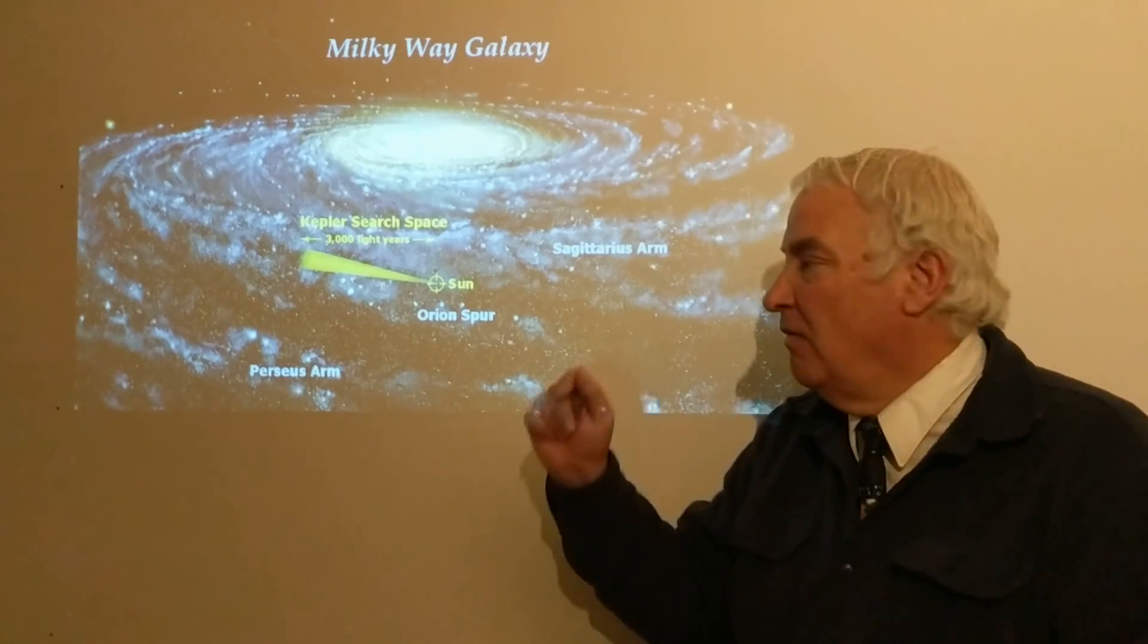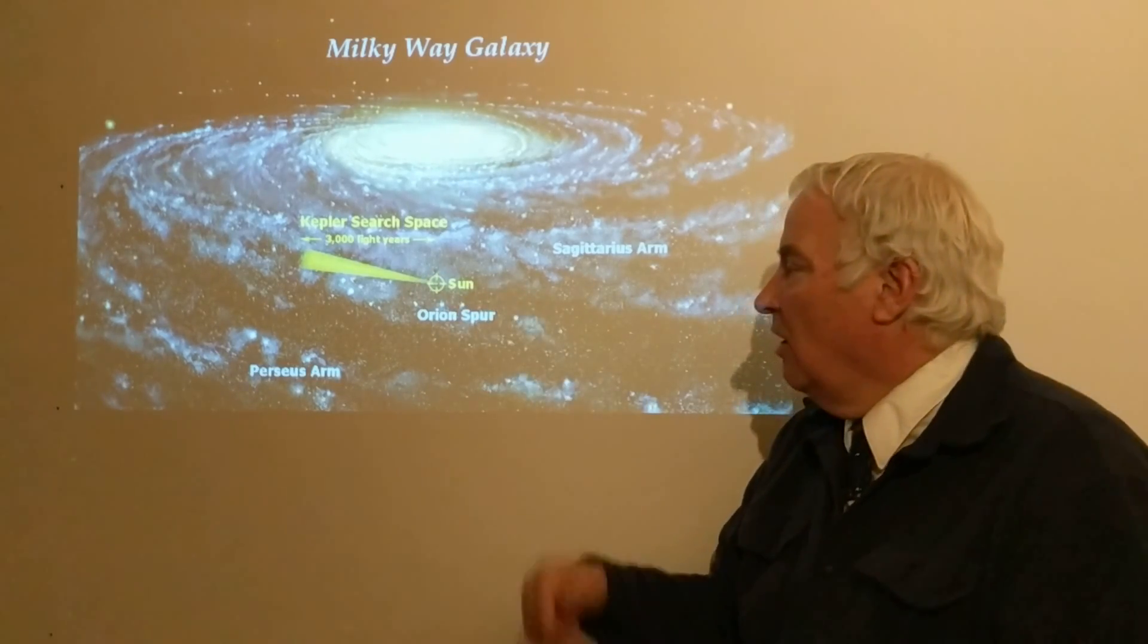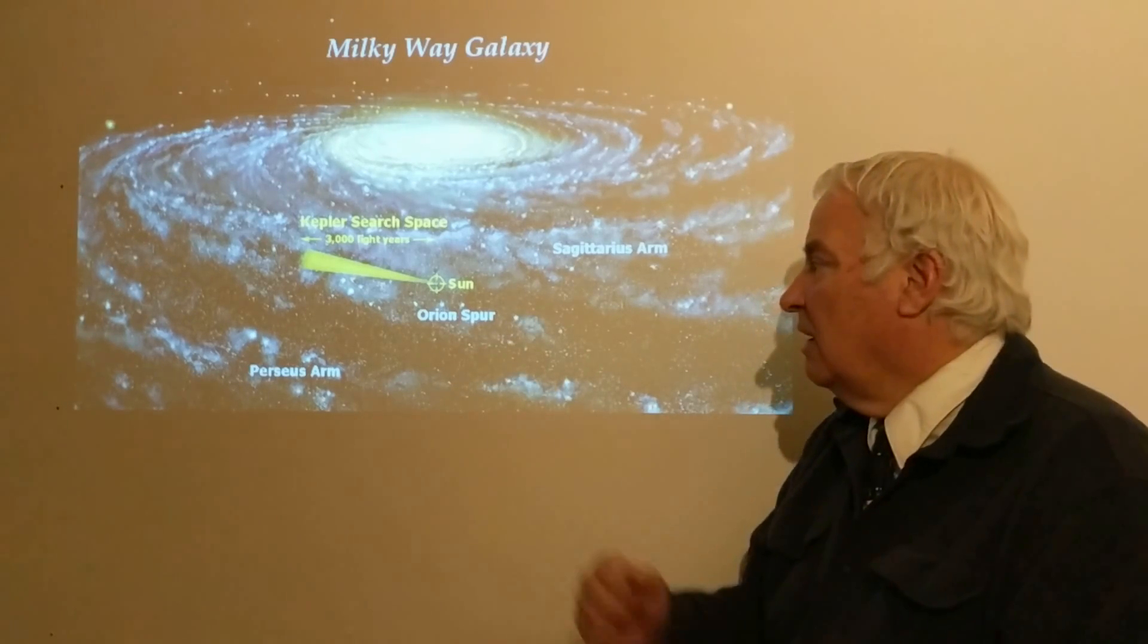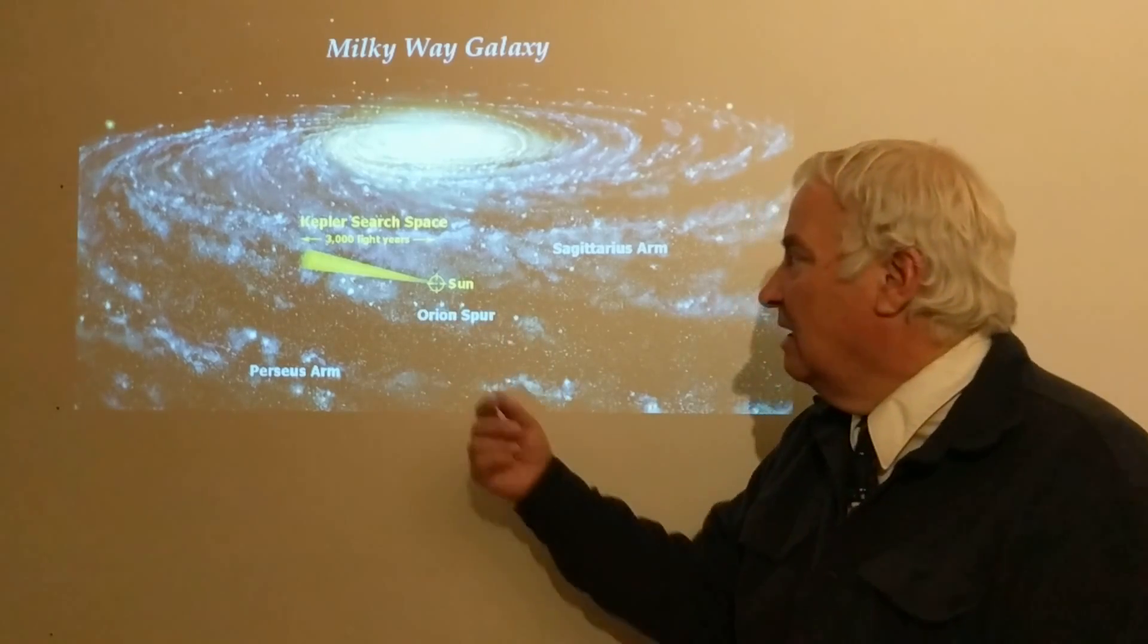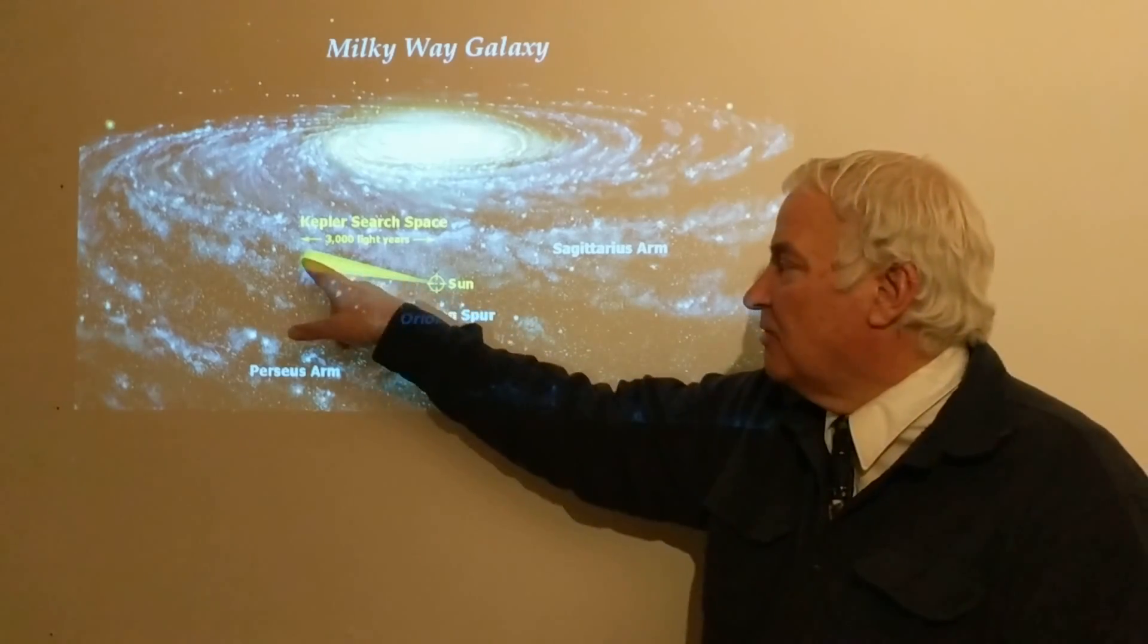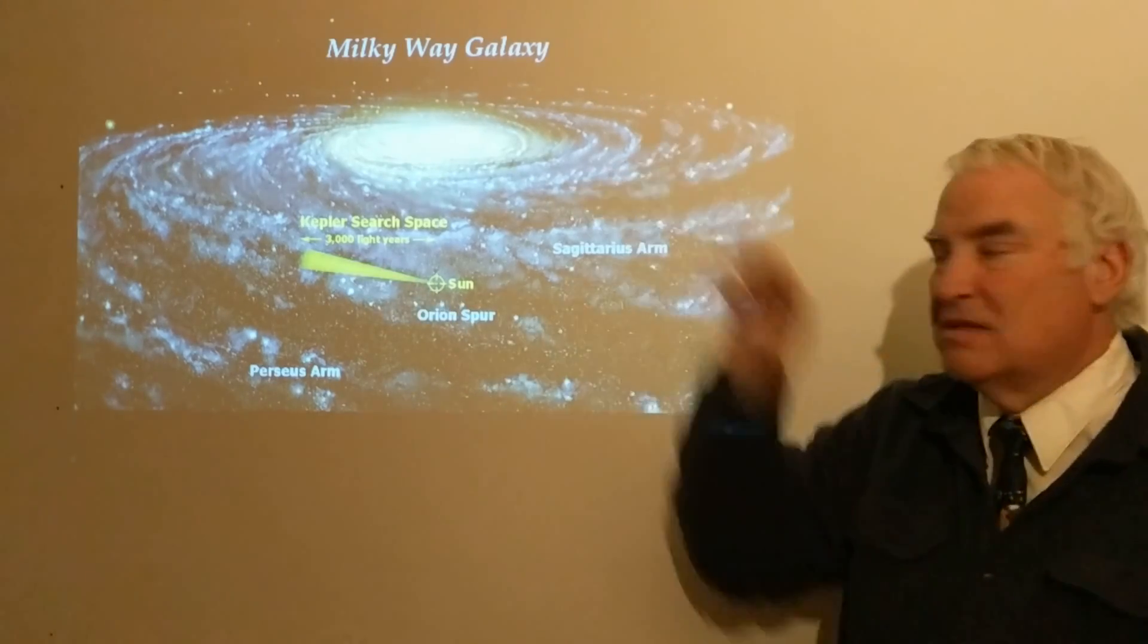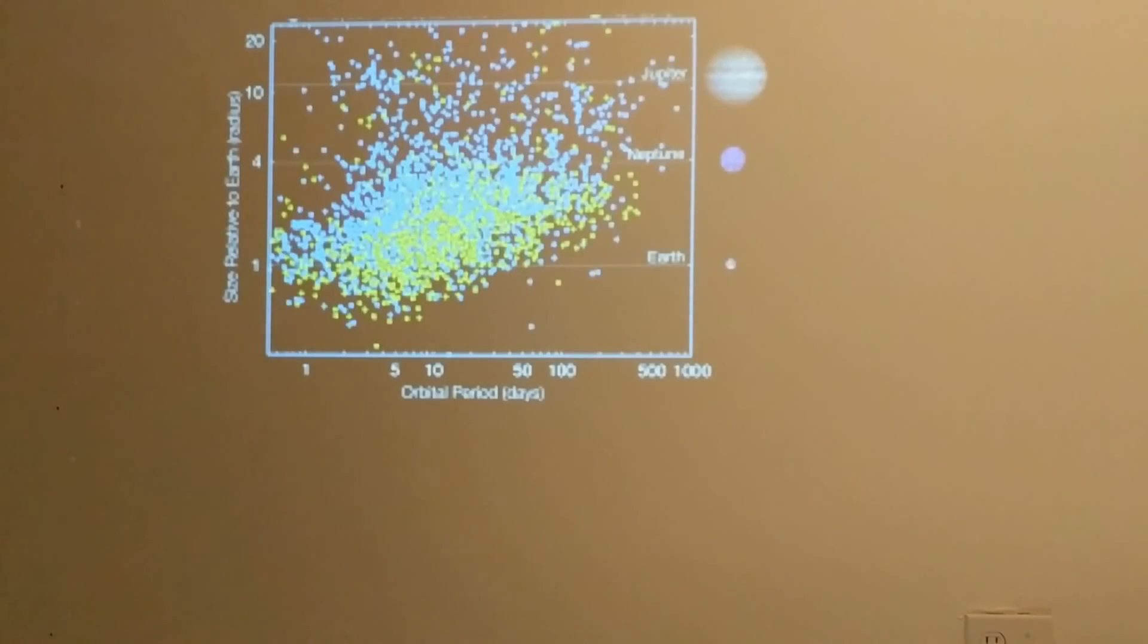Anytime a planet moved in front, the drop in brightness was measured. If three of those were measured during that time period, a confirmation was made and a planet was found. Otherwise, if a couple of them were done, it was still considered a planet candidate and needs more observations. This shows that planets and planet candidates were found out to a fairly large distance, but only in one direction because this is the direction of the Kepler satellite. There will be many more interesting detections to come in the future.